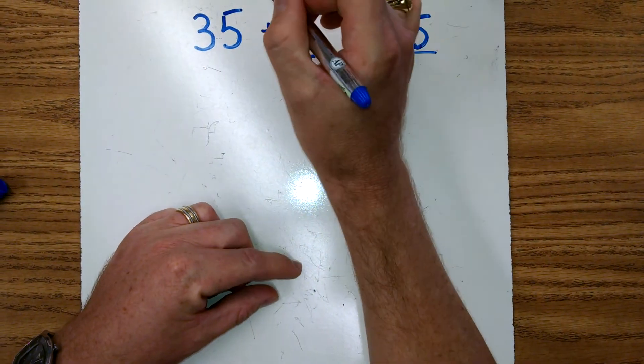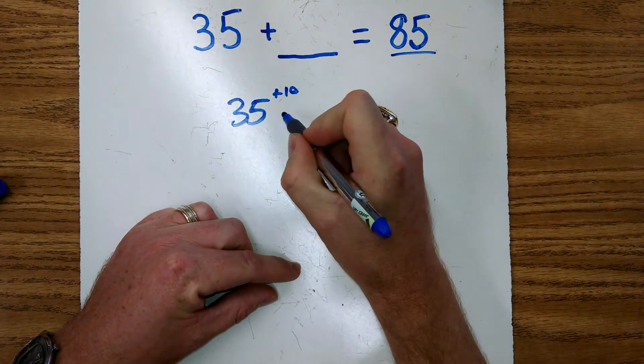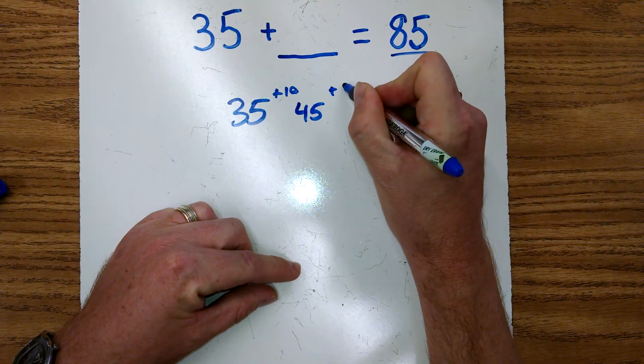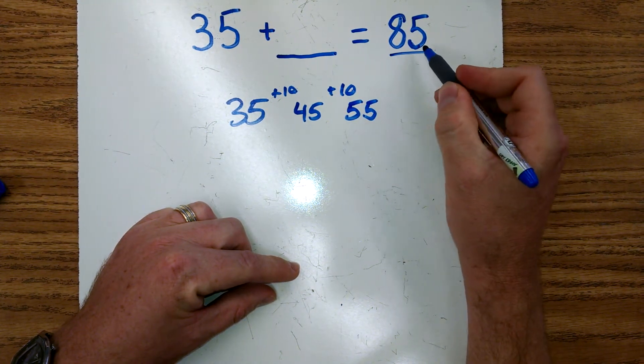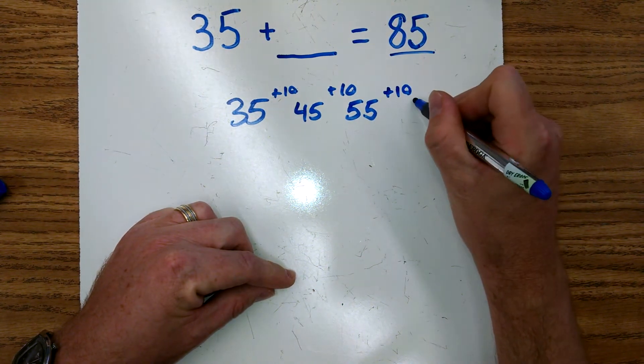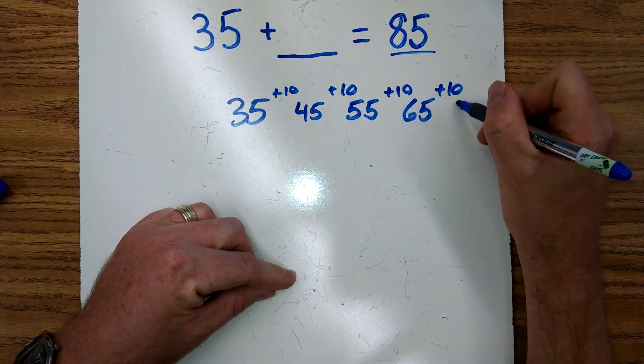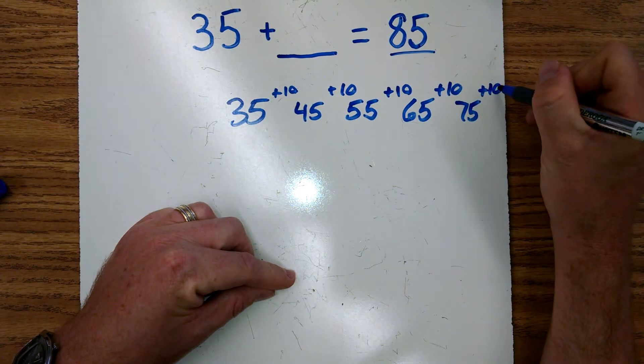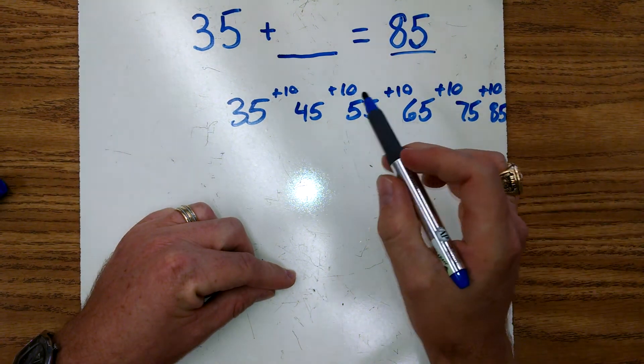The way we do it is: 35, 45, 55, are we at 85 yet? We're getting close. Plus 10 is 65, 10 more is 75, haven't gone over yet, 10 more is 85, and there we are.